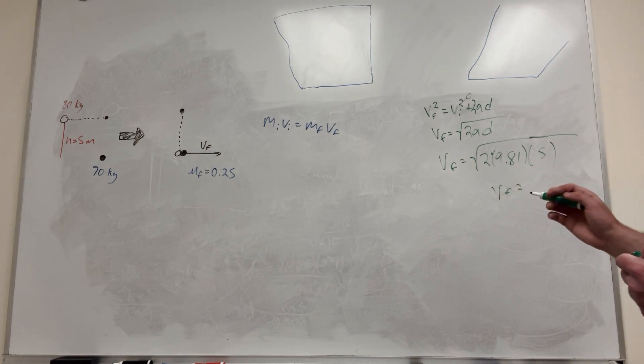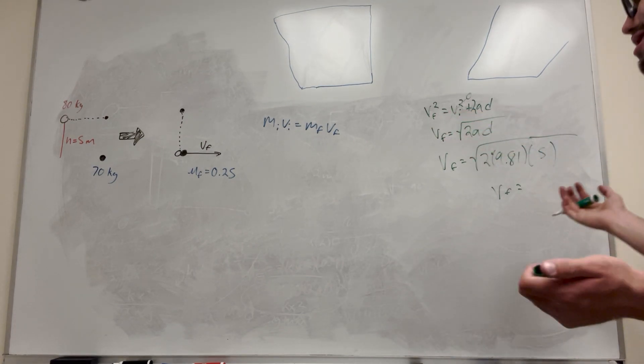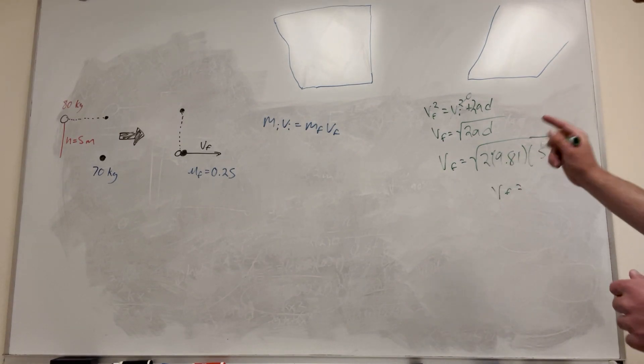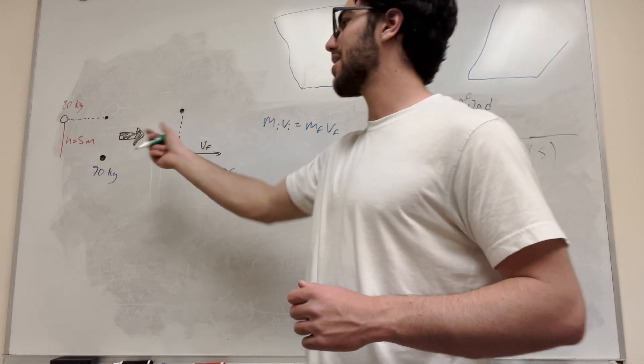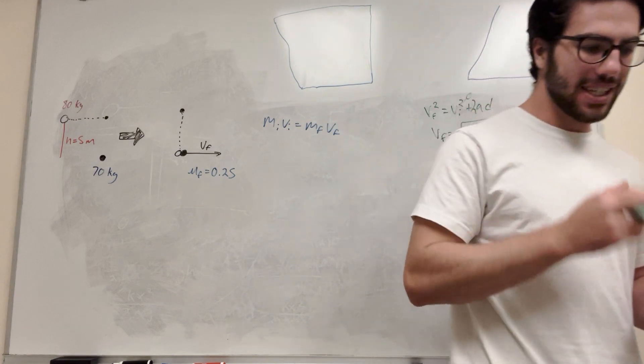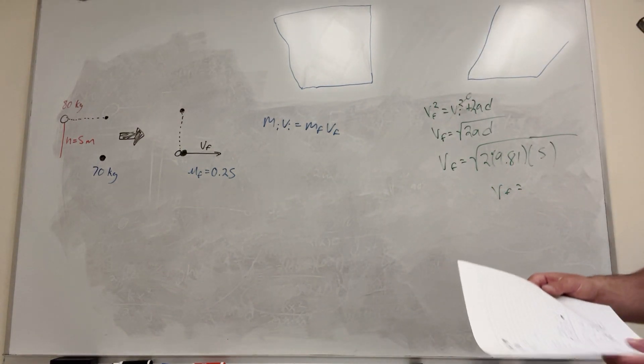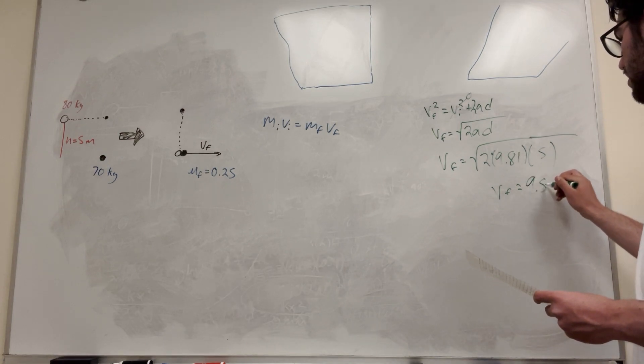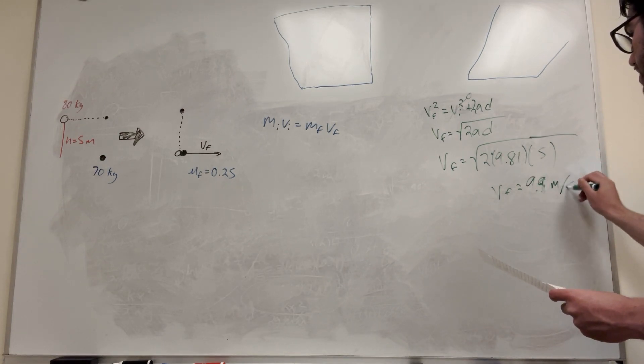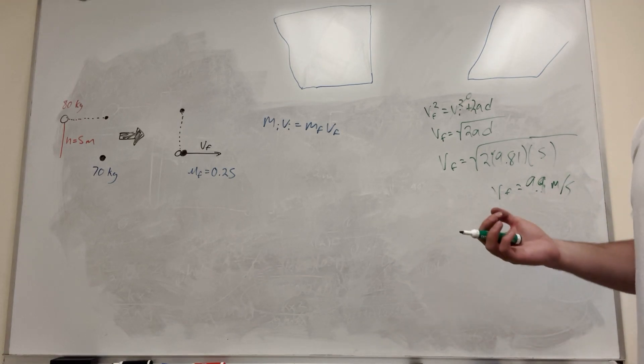So you're going to get that his velocity, this is a different velocity final. I guess this should be, keep in mind that this velocity is his velocity at this point, not the final velocity of the system. I guess it's just hard to label everything, right? But this is 9.9 meters a second. So that's how fast he's going when he runs into the bad guy.